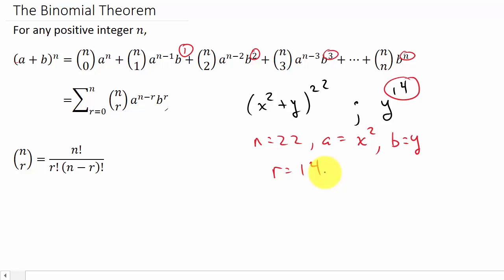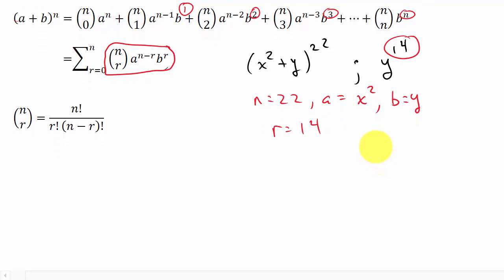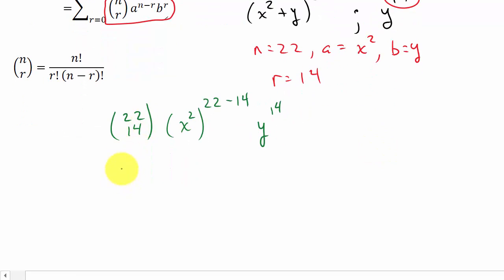All right. So now all we have to do is plug all of this into just this right here, and that will give us the solution. So I've got combination 22, n is 22, r is 14, times a raised to the n minus r. So a is x squared, so that's times x squared raised to the n minus r, times b. So b is y raised to the r. And so this is combination 22 choose 14 x squared, and then 22 minus 14, that's 8, times y to the 14th.